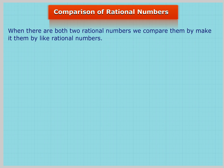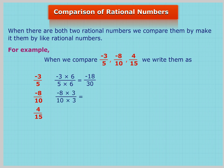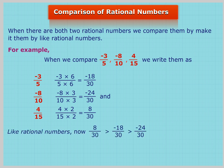When there are more than 2 rational numbers, we compare them by making them like rational numbers. For example, when we compare -3/5, -8/10, and 4/15, we write them with a common denominator of 30: -3/5 = -18/30, -8/10 = -24/30, and 4/15 = 8/30. Now, 8/30 is greater than -18/30 is greater than -24/30. So, 4/15 is greater than -3/5 is greater than -8/10.